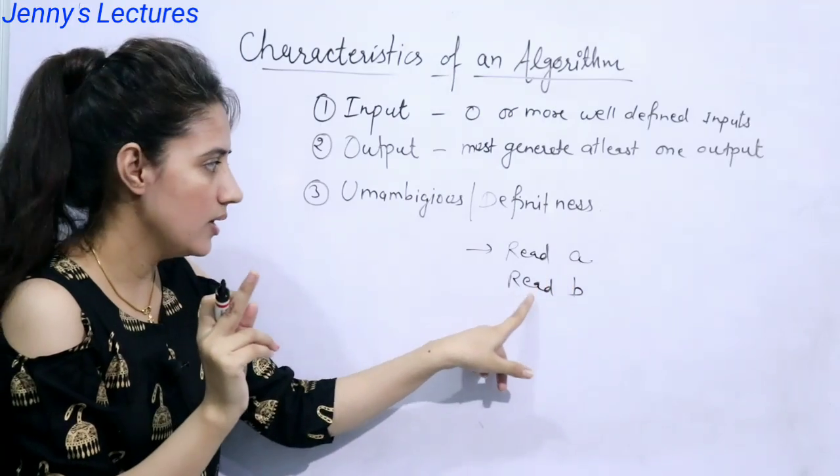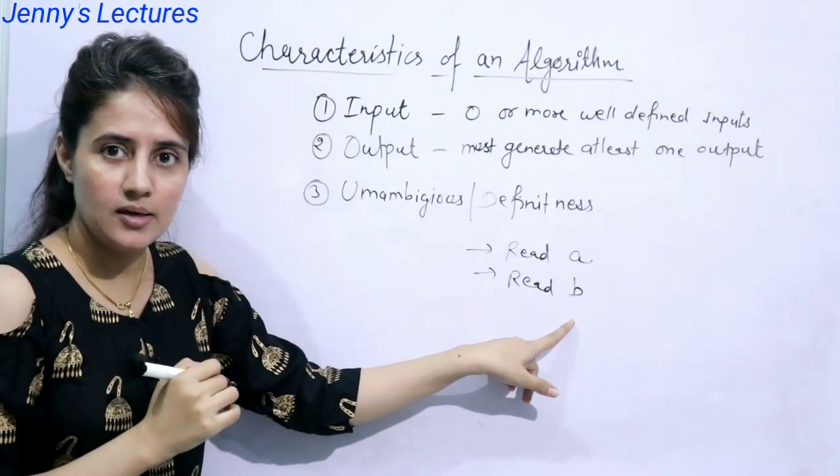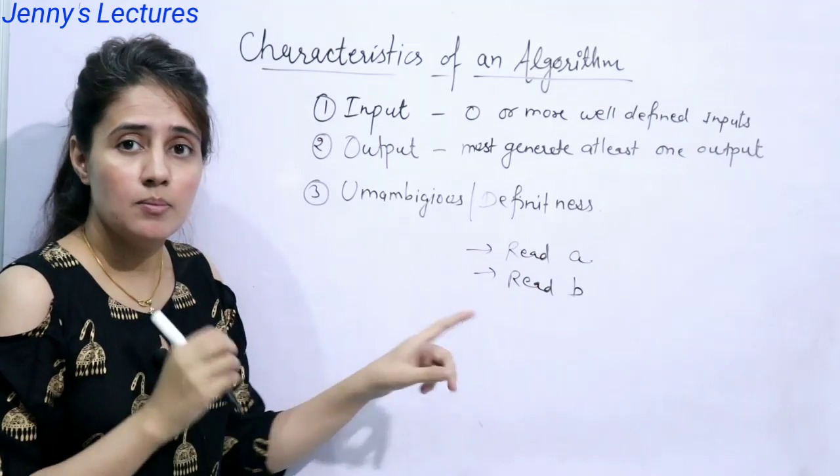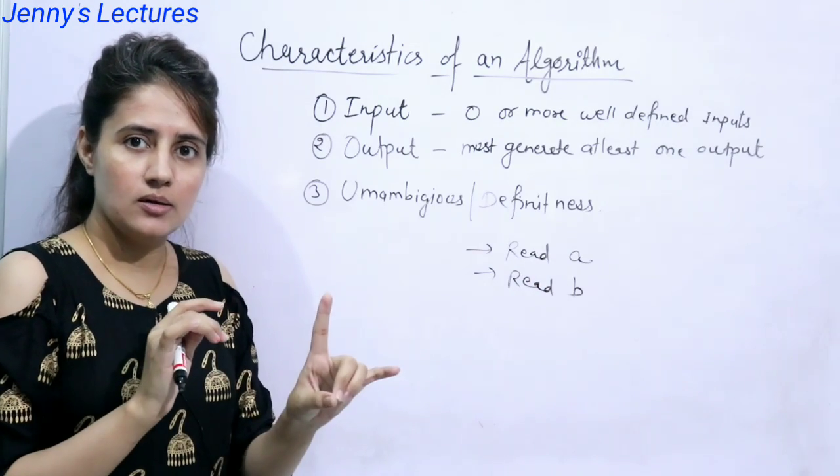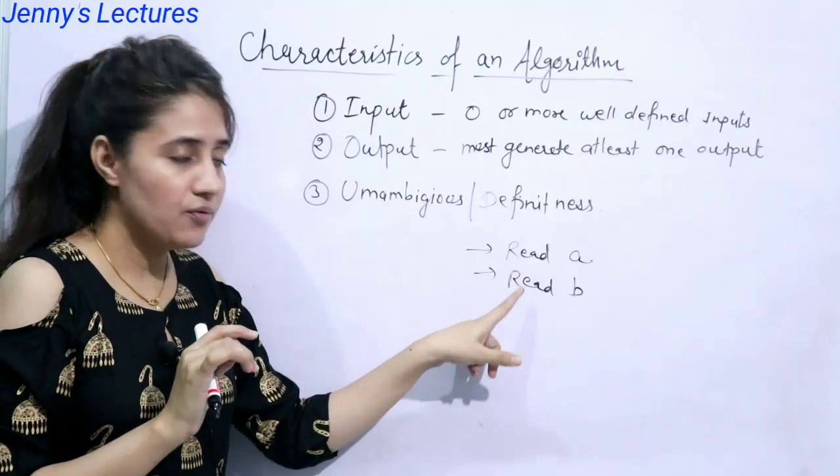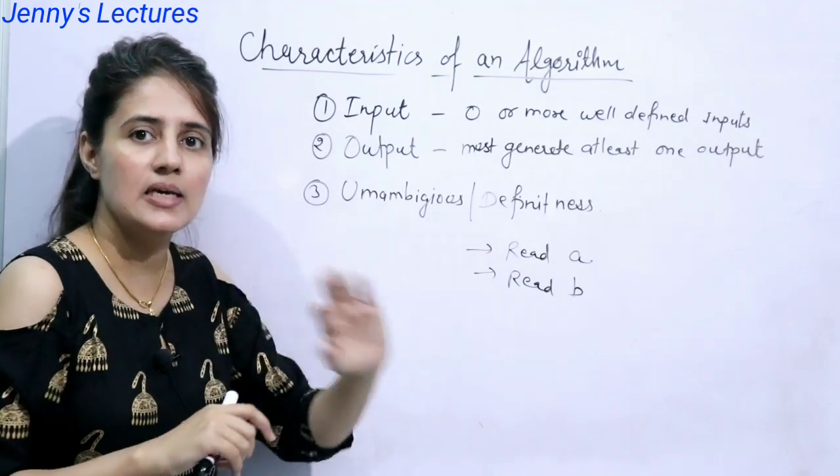We are reading a variable a, we are reading another value for another variable b. So every statement must have a single meaning, only one meaning, it means every statement must be unambiguous, there should be no ambiguity. It should be very clear.